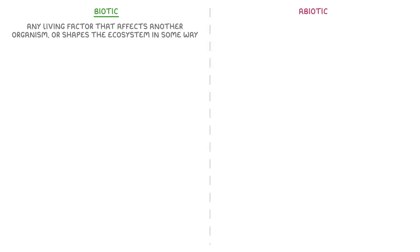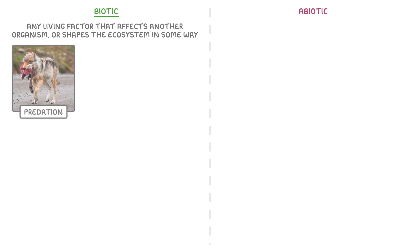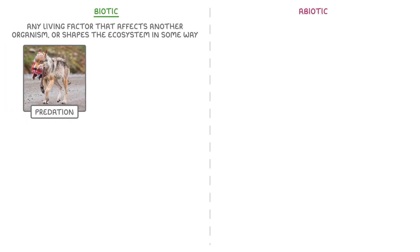We can describe biotic factors as any living factor that affects another organism, or that shapes the ecosystem in some way. It's kind of a hard one to describe, but if you think of something like predation, then we would class that as a biotic factor, because it's a living process and it can influence the population of another species.